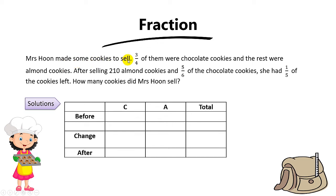Mrs. Hoon made some cookies to sell. Three-quarters of them were chocolate cookies and the rest were almond cookies. After selling 210 almond cookies and five-sixths of the chocolate cookies, she had one-fifth of the cookies left. How many cookies did Mrs. Hoon sell?